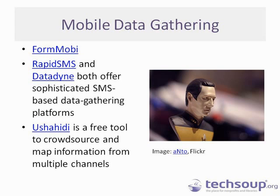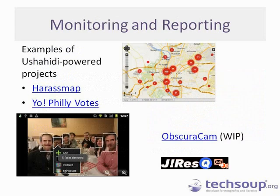Ushahidi is a pretty awesome tool for crowdsourcing information and mapping it. It gathers information from multiple channels including text messages, email, and Twitter, and allows you to map it. HarassMap uses Ushahidi to gather and map reports of violence and harassment against women in Syria — it takes a social problem that often goes unreported, allows people to report incidents anonymously, and makes it visible in a really compelling way. Yo! Philly Votes is another Ushahidi-powered initiative, a poll monitoring initiative for U.S. elections in Philadelphia that gathers and maps voting incident reports such as voter intimidation and long lines, allowing election monitors to understand where issues are occurring and respond accordingly.